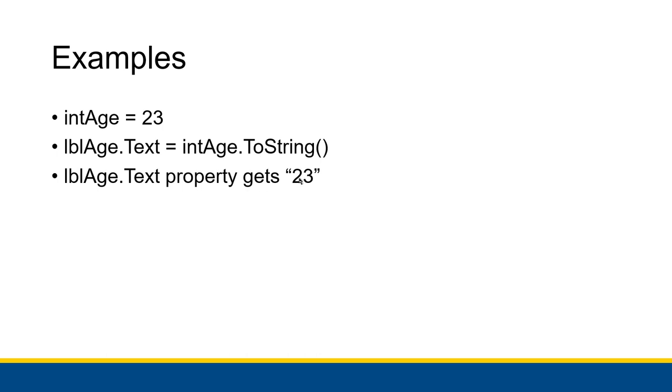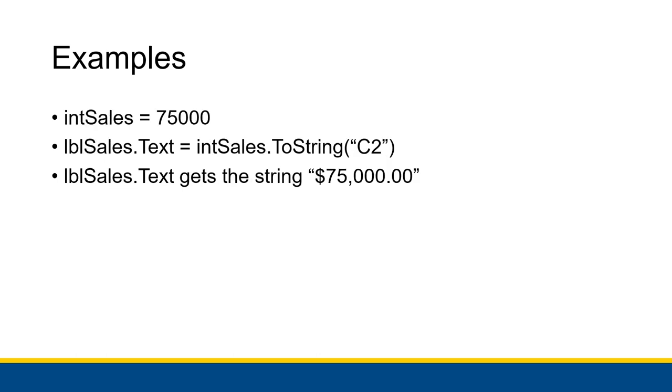If you want to do some currency formatting, a really good option is to use C2 as our format string. So if int sales is 75,000 and we're putting int sales into labelsales.text, we can use .toString passing in the C2 format string. This says convert this into currency form.